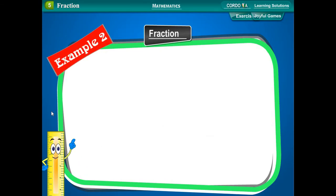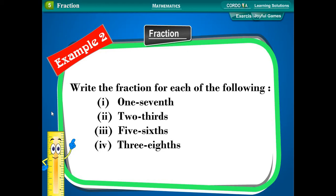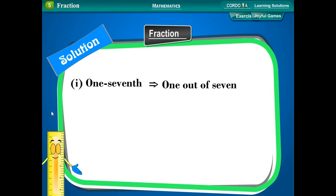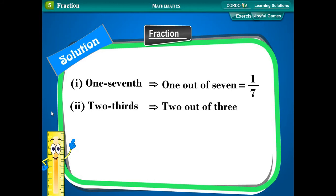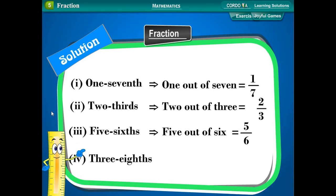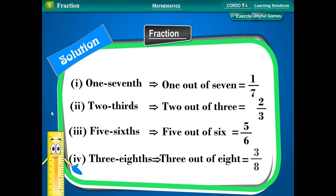Example 2: Write the fraction for each of the following: 1/7th, 2/3rds, 5/6ths, 3/8ths. Solution: 1/7th implies 1 out of 7, which is equal to 1 upon 7. 2/3rds implies 2 out of 3, which is equal to 2 upon 3. 5/6ths implies 5 out of 6, which is equal to 5 upon 6. 3/8ths implies 3 out of 8, which is equal to 3 upon 8.